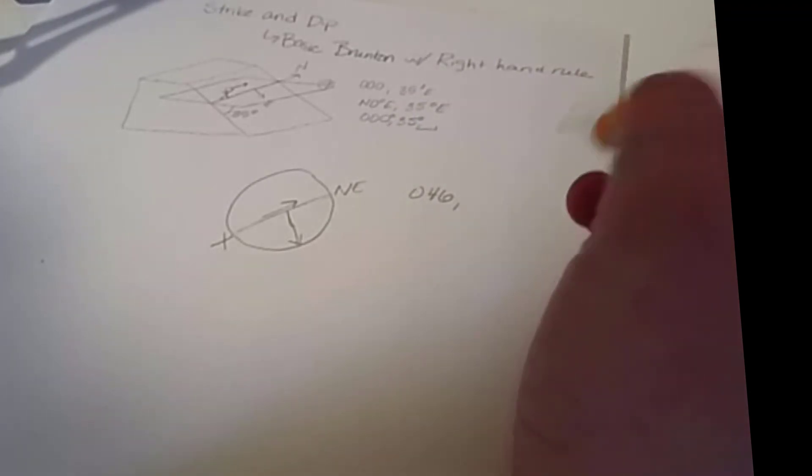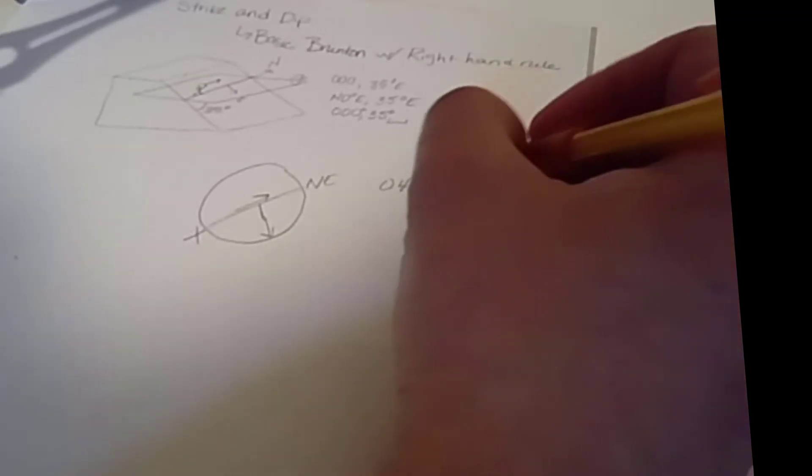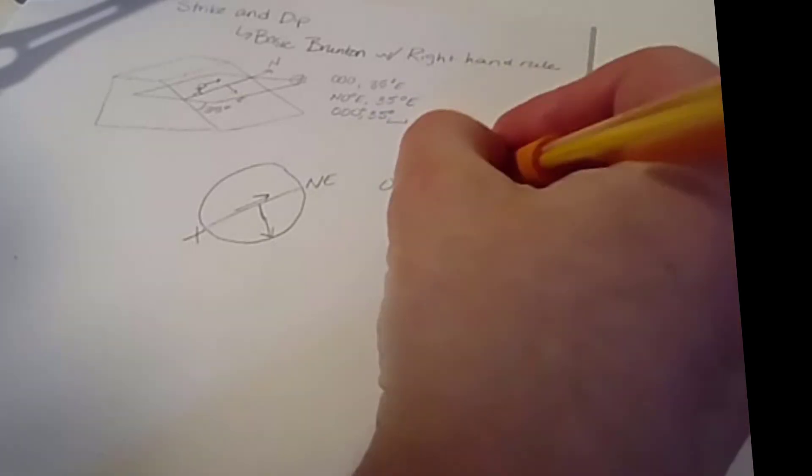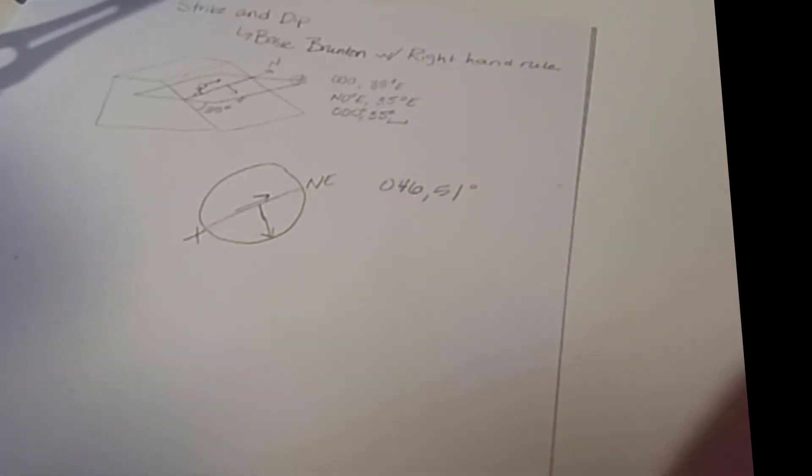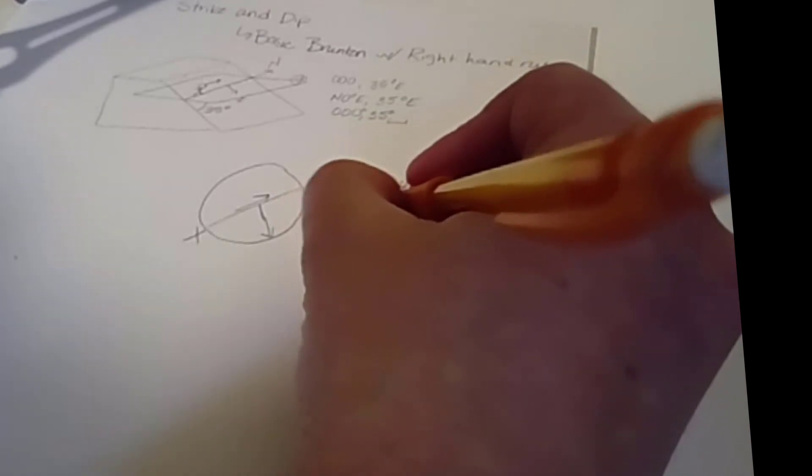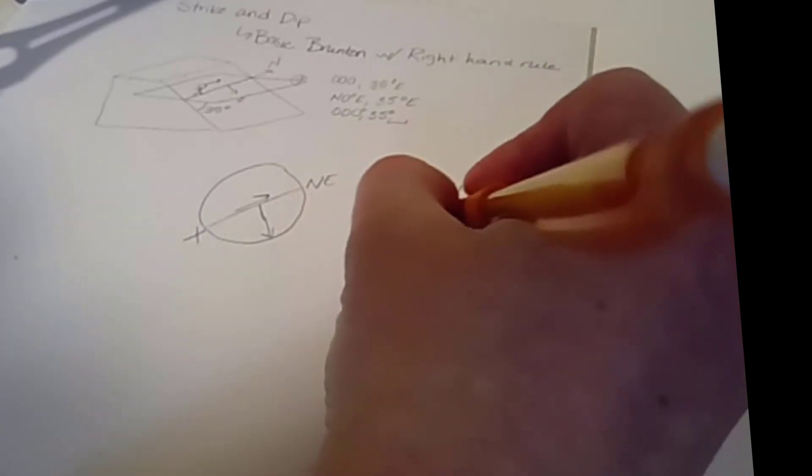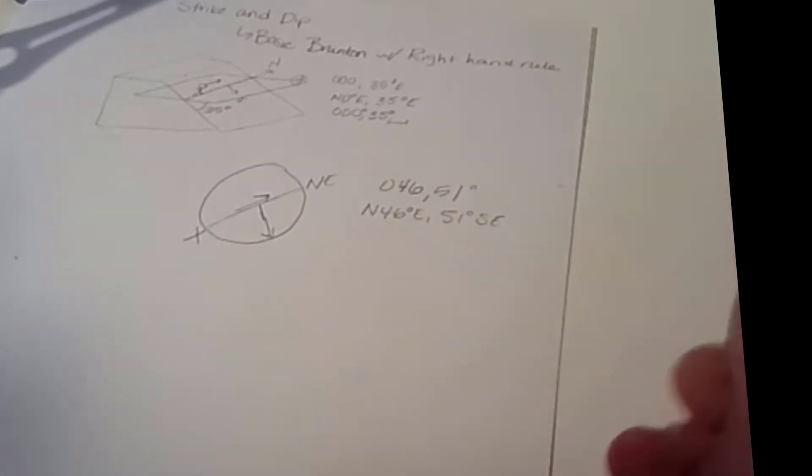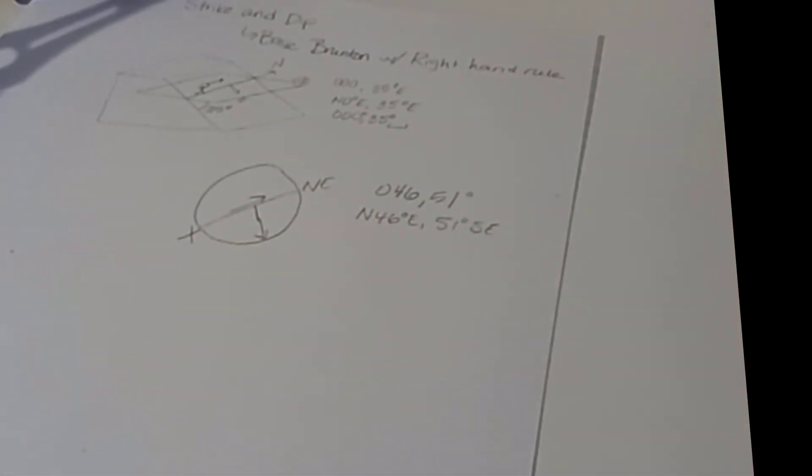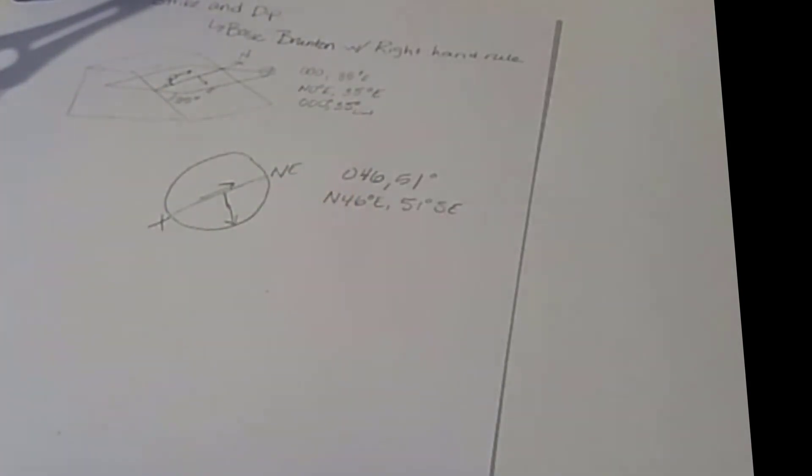So back on my paper, I'm going to write down my strike and dip. My strike was 046, comma, and my dip is going to be 51. Now that follows the right-hand rule, but I could also write north 46 east, 51 degrees to the southeast. And I know personally, I'm going to feel a lot better about having more data. So that's how I take a strike and dip.